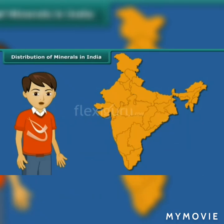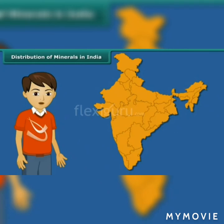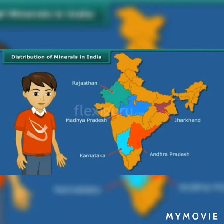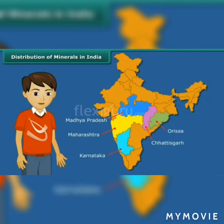Major bauxite producing areas are Jharkhand, Odisha, Chhattisgarh, Madhya Pradesh, Gujarat, Maharashtra and Tamil Nadu. Copper is mainly produced in Rajasthan, Madhya Pradesh, Jharkhand, Karnataka and Andhra Pradesh. Manganese is mainly found in Maharashtra, Madhya Pradesh, Chhattisgarh, Odisha, Karnataka and Andhra Pradesh.